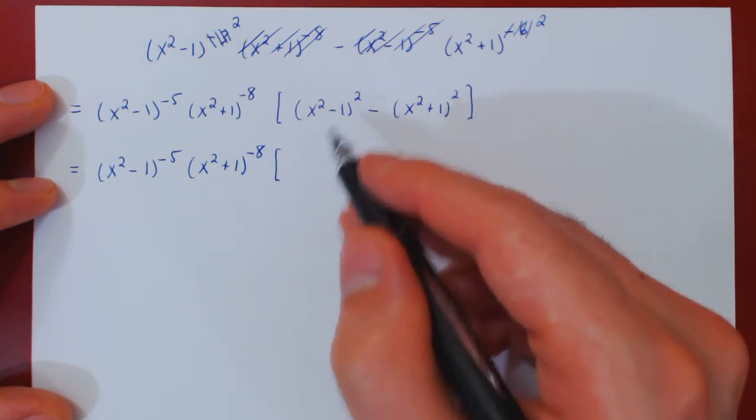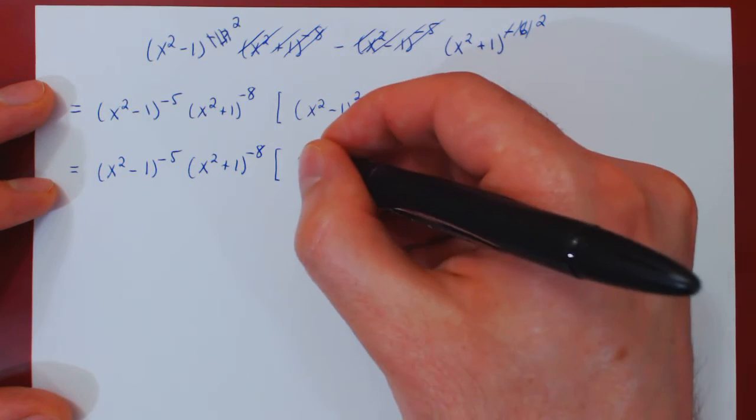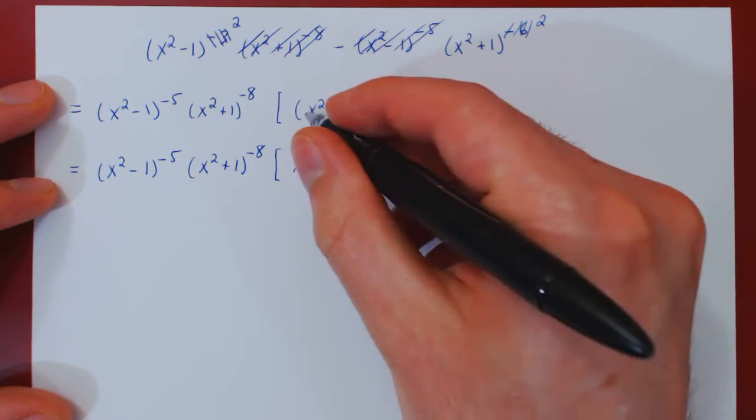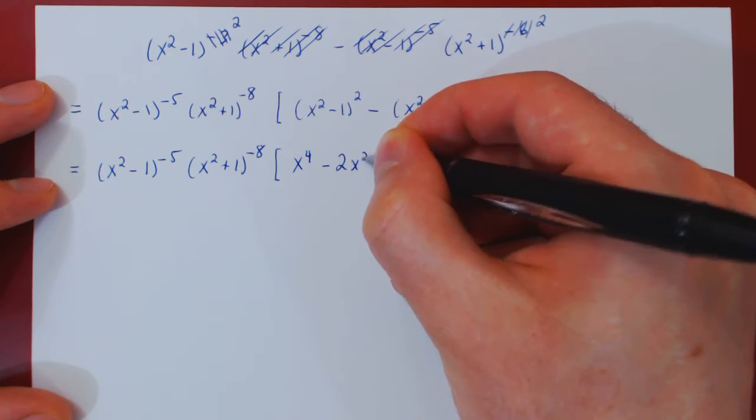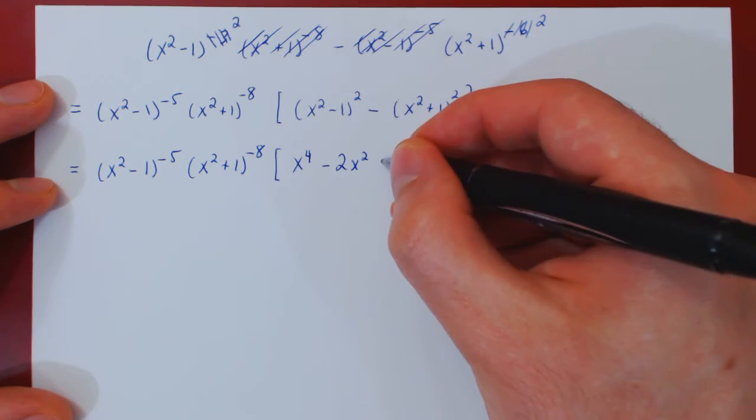So if we square x squared minus 1, we get x squared times x squared, x to the 4. Negative 2x squared. Negative 1 times itself, positive 1.